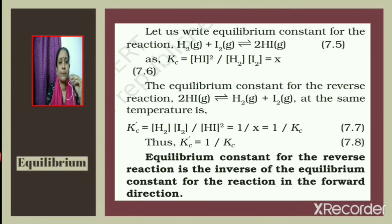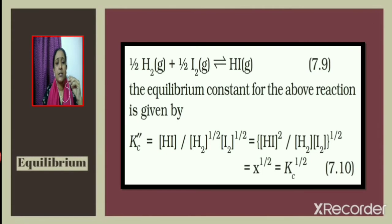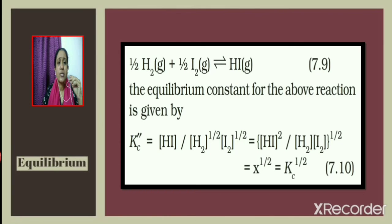Now consider the reaction ½H₂ + ½I₂ ⇌ HI. The equilibrium constant K''c = [HI] / [H₂]^(1/2) · [I₂]^(1/2), which equals x^(1/2) = Kc^(1/2) = √Kc.